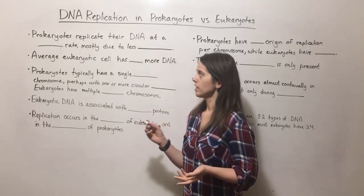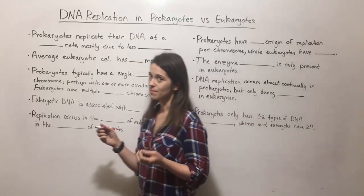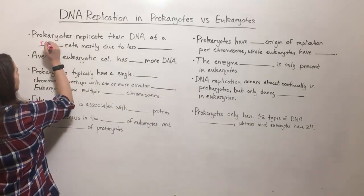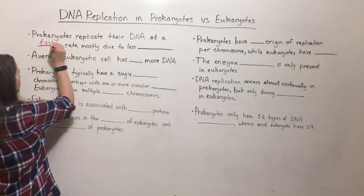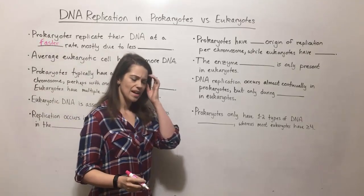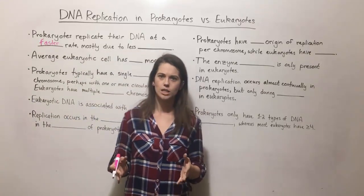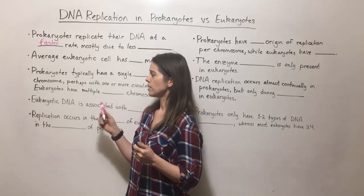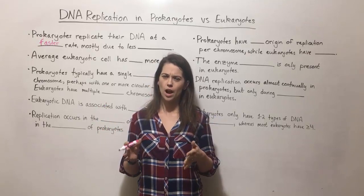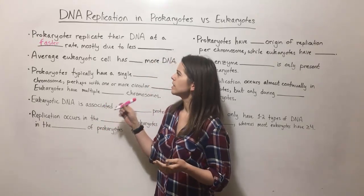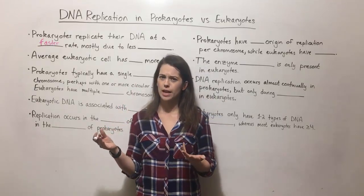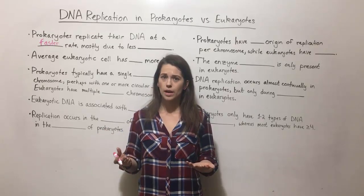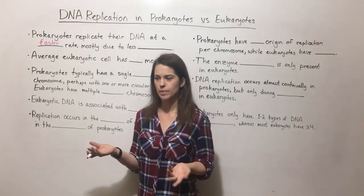First let's talk about the rate of replication. Prokaryotes replicate their DNA at a much faster rate — around 1000 nucleotides per second. Remember that nucleotides are the building blocks of DNA. Eukaryotes replicate at an average rate of about 100 nucleotides per second. This means that prokaryotes can replicate their entire genome in less than an hour often, whereas eukaryotes it can take a few days.